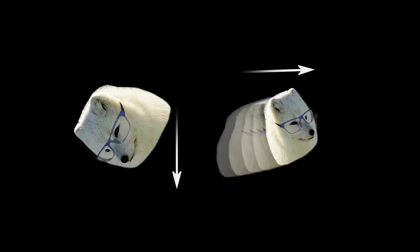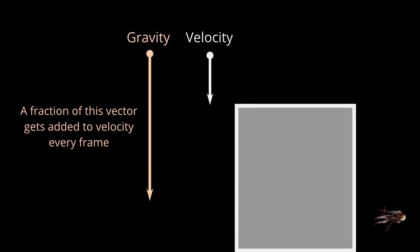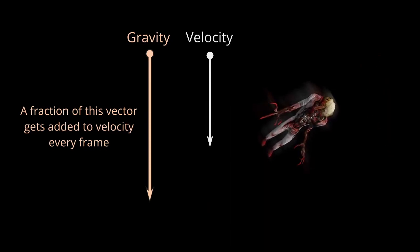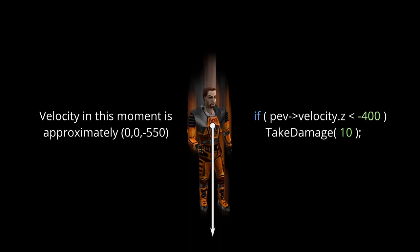So now you might be wondering, how does gravity work? How does velocity work? Velocity is applied to the origin every frame, and gravity is similarly applied to velocity. In a freefall you get a constantly growing velocity vector pointing down due to gravity, which brings the origin down on the z-axis. Because velocity is represented by a number, you can check how fast you're actually falling — and that's basically how fall damage works. If velocity Z is less than negative 100 or so, then take away some health. It's that simple.